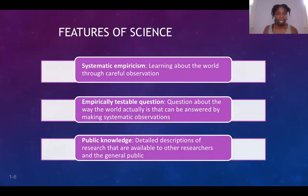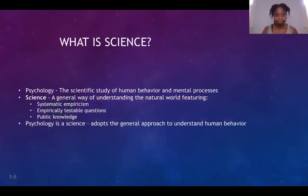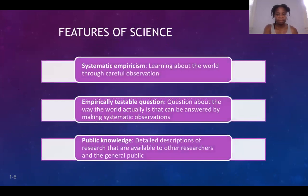The first feature of science is systematic empiricism — learning about the world through careful observation. This is one aspect that makes psychology a science. The second is being concerned with empirical questions: questions about the way the world actually is, which can be answered by systematically observing it. These empirically testable questions — questions about the world that can be answered by making systematic observations — are the second aspect of what makes psychology a science.